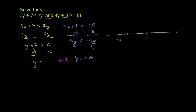That's negative 7. And then negative 6, 5, 4, 3, 2, 1 — this would be 0, and then you could keep going more positive. We're looking for all of the y's that are less than negative 7. So not including negative 7, we'll do an open circle around negative 7. And y also has to be greater than negative 14, so you make an open circle around negative 14. The y's that satisfy both constraints are all of the y's in between.